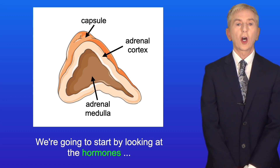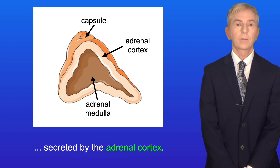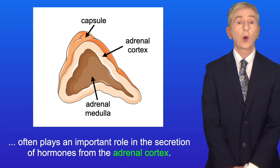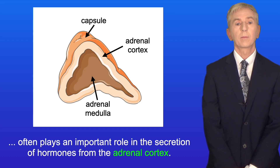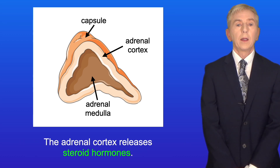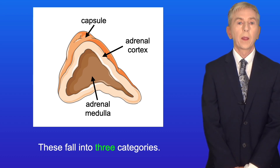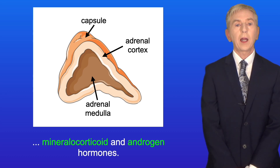We're going to start by looking at the hormones secreted by the adrenal cortex. A key idea you need to understand is that the pituitary gland often plays an important role in the secretion of hormones from the adrenal cortex. The adrenal cortex releases steroid hormones and these fall into three categories: glucocorticoid, mineralocorticoid, and androgen hormones.